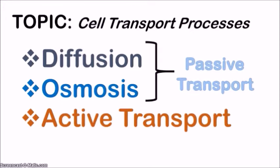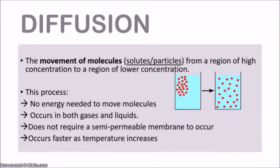Let's look at diffusion. Diffusion is the movement of molecules — which are solutes or particles — from a region of high concentration to a region of lower concentration. As you can see in the diagram, we're looking at the diffusion of solutes in a beaker of water. Solutes are substances that can dissolve in water — the most common ones are sugars and salts. Here, the red molecules represent sugar molecules in a region of high concentration, and they're going to start spreading out to the surrounding water where there is lower concentration.